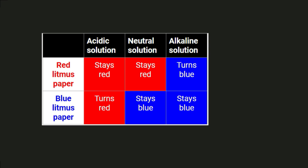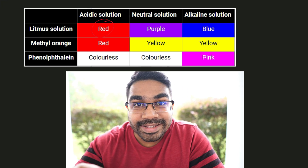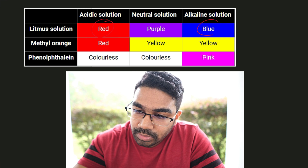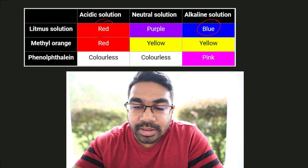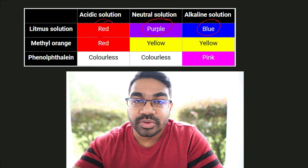Besides litmus paper, there are also a few solutions we can use to test whether a substance is acidic, neutral, or alkaline. If you remember from the litmus paper, whenever a solution is acidic the final color is always red, and whenever the solution is alkaline the final color is always blue. This theme is carried out with litmus solution as well: litmus solution is red in an acidic solution, blue in an alkaline solution, and purple — a mixture of red and blue — in neutral solution.